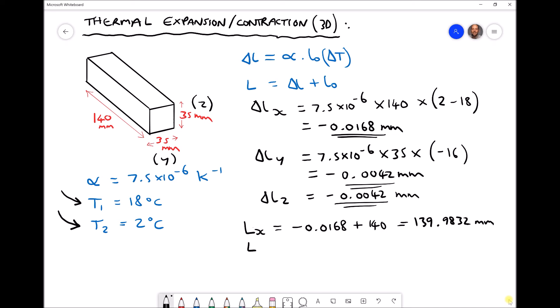And our y and z directions again are going to be the same. They are minus 0.0042 plus 35, giving us 34.9958.